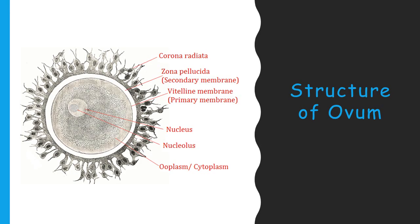We will now discuss the structure of the ovum with the help of this diagram. The ovum has a haploid nucleus, and the condensed region inside the nucleus is the nucleolus. The cytoplasm of the ovum is called ooplasm, and the ovum is surrounded by three membranes. The innermost membrane is called the vitelline membrane or primary membrane, secreted by the ovum itself. The middle layer is called zona pellucida or the secondary membrane, and the outermost layer formed of follicular cells is called corona radiata.